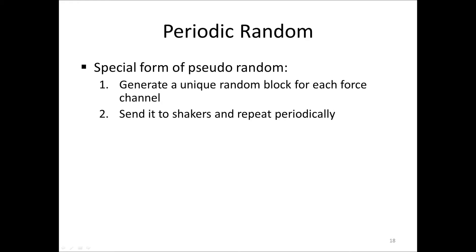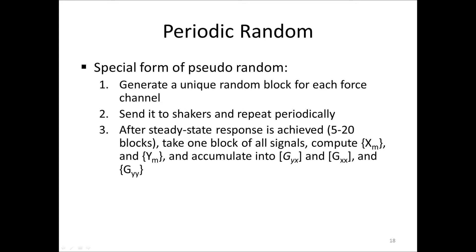PeriodicRandom is a special form of pseudorandom and is generated as follows. First, you generate a random block for each force channel. Then these blocks are all sent out to the shakers and repeated periodically. After, say, 5 to 20 blocks, when the structure's response reaches steady state conditions and the structure responds in a periodic manner, one block is acquired of all the signals, that is, all the inputs and outputs. DFTs are computed and put in the vectors XM and YM, the intermediate average vectors. Then they are accumulated into the spectrum matrices GYX and GXX and a vector GYY for the outputs only, because we don't need the cross-spectra between the outputs.